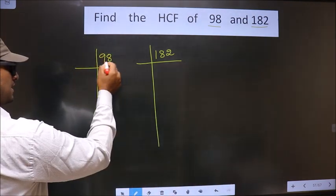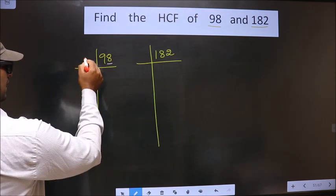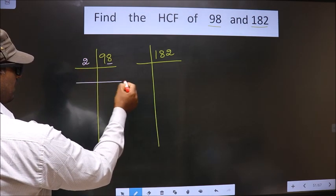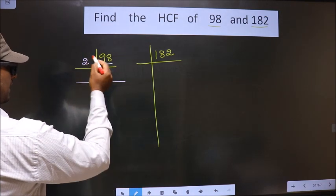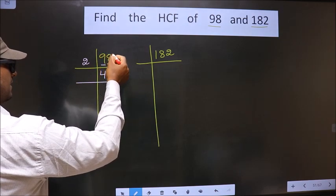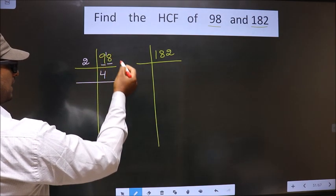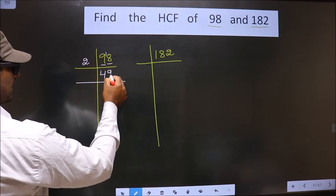For this number, the last digit is 8, which is even, so we take 2 here. Now, the first number is 9. A number close to 9 in 2 table is 2 fours 8. 9 minus 8 is 1, 1 carried forward making it 18. When do we get 18 in 2 table? 2 nines, 18.